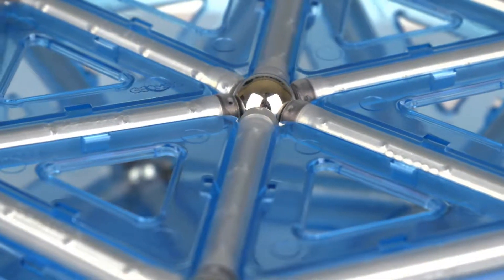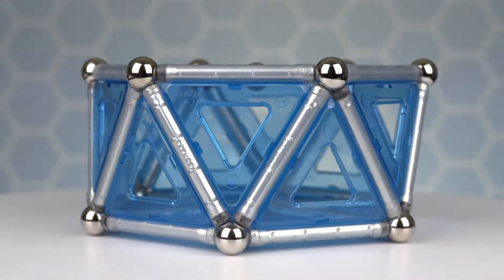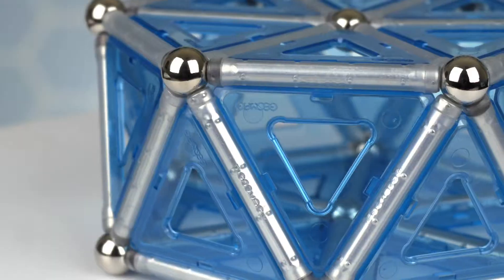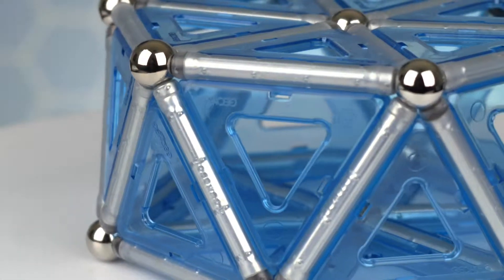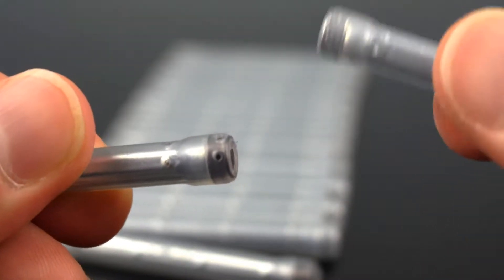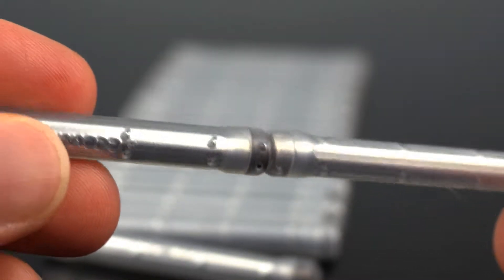Thanks to the greater strength of its magnets, this Pro-L line allows you to create even more complex models and structures, giving greater scope to your imagination. The Pro-L line also has visible polarity indicators on the rods that help the builders visually determine which end to use.